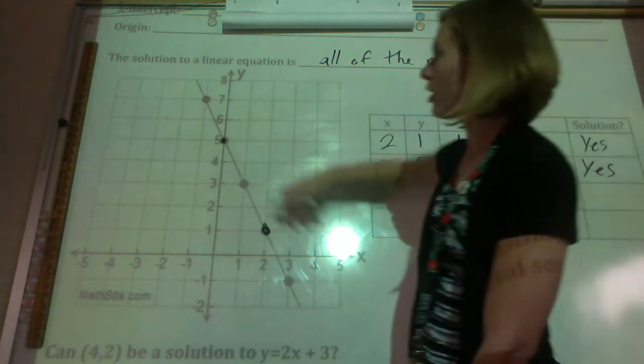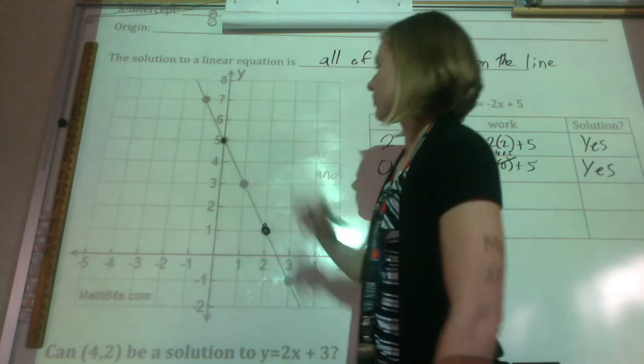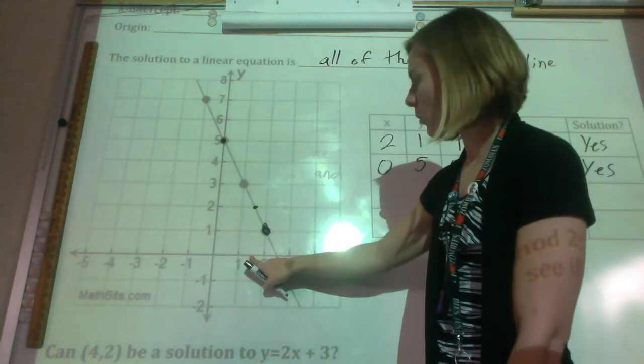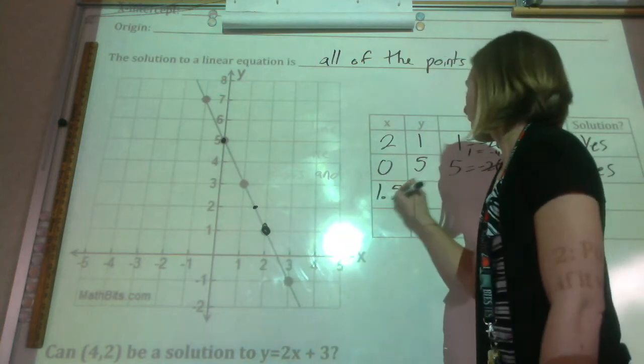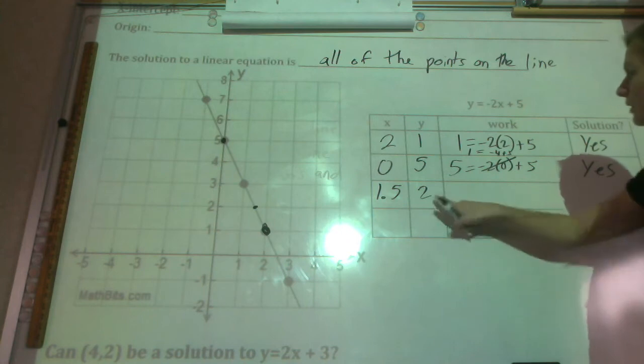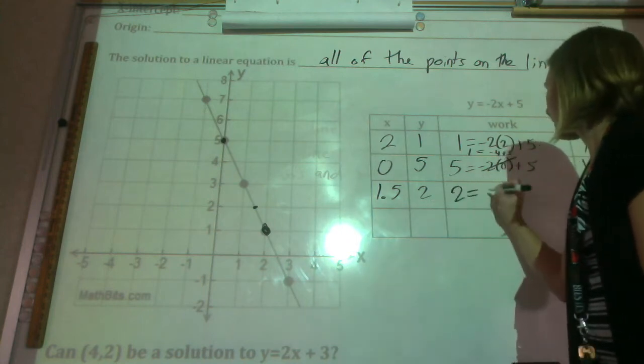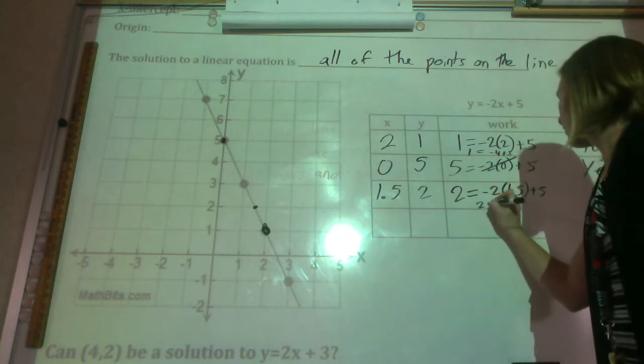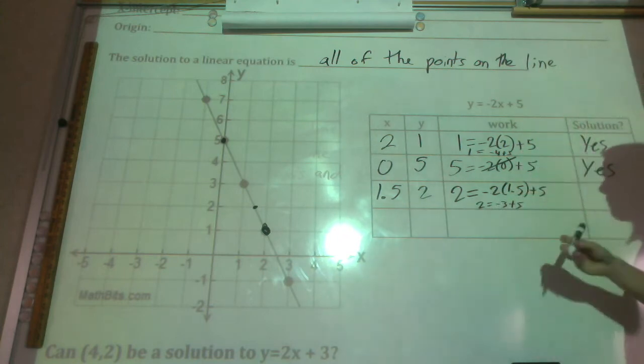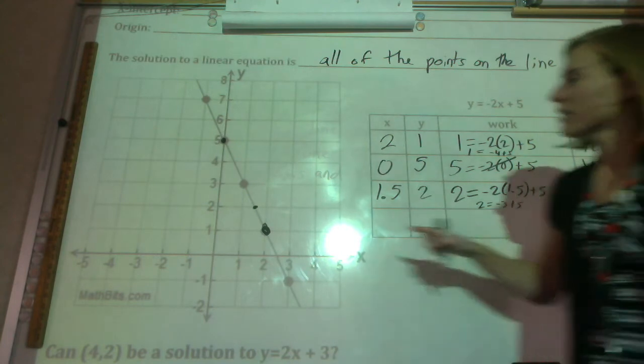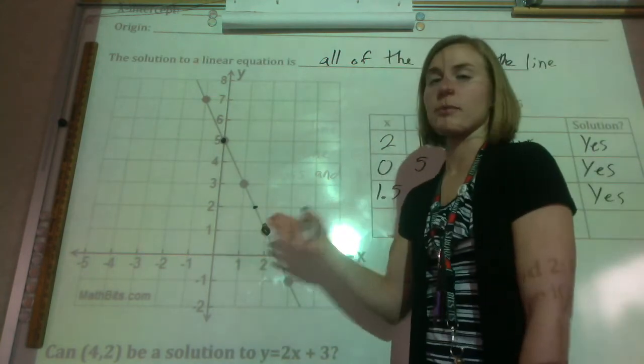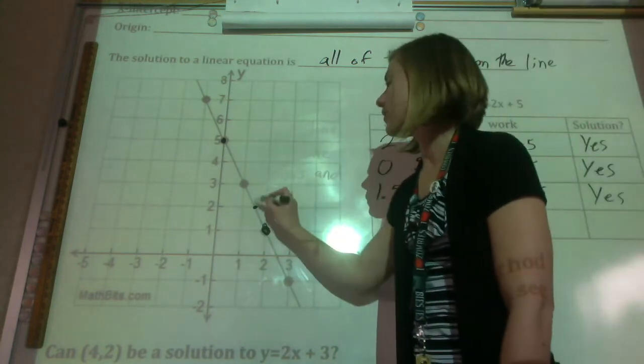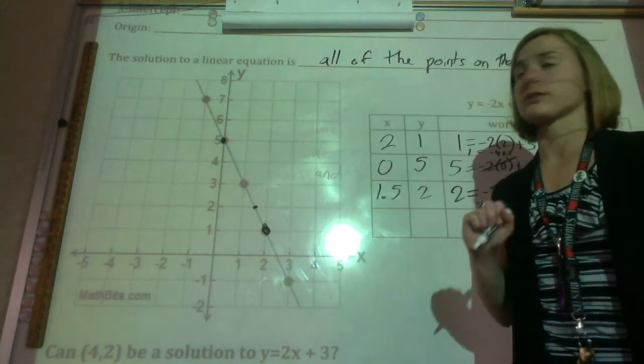So let's try ones that maybe aren't already pointed out on this one. Maybe right here. That's a (1.5, 2). Let's see if that's a solution. So 2 goes in for y. 2 times 0.5 makes it 3. So 2 equals negative 3 plus 5. Yep, that works too. So you can see, even the points that you may not think are really points because they're not whole numbers are still a solution. Even all the points that may not be nice whole numbers are still going to be solutions.